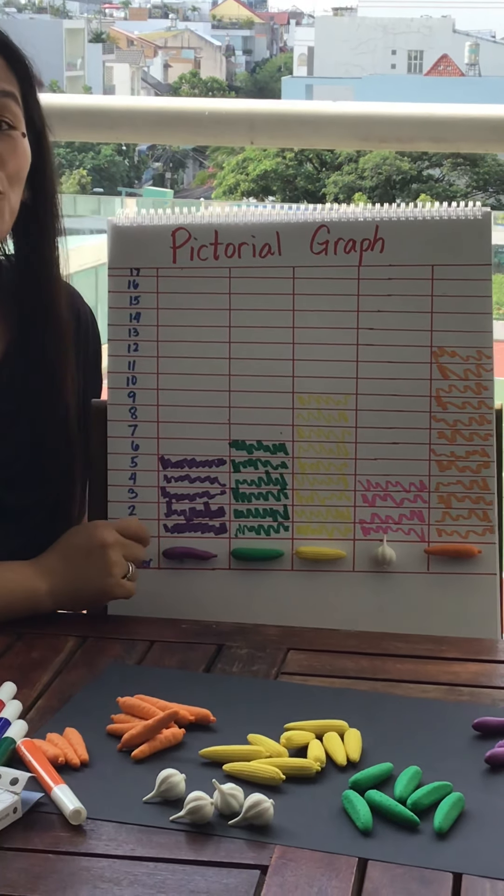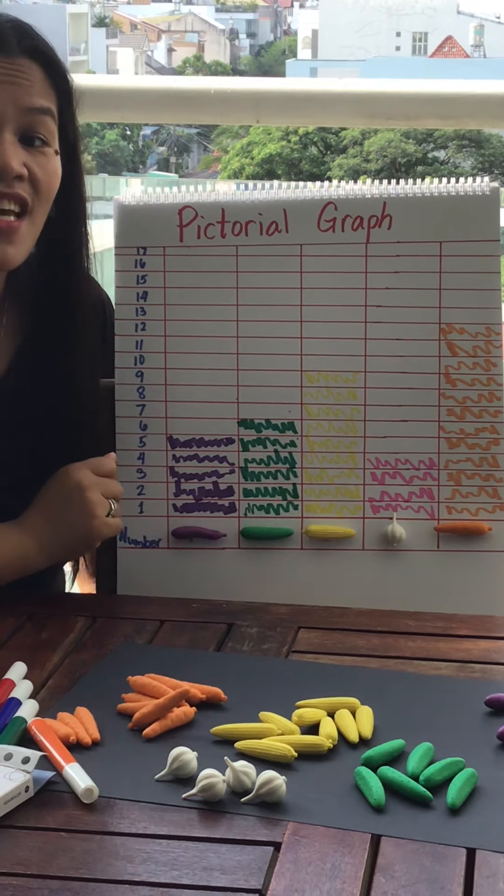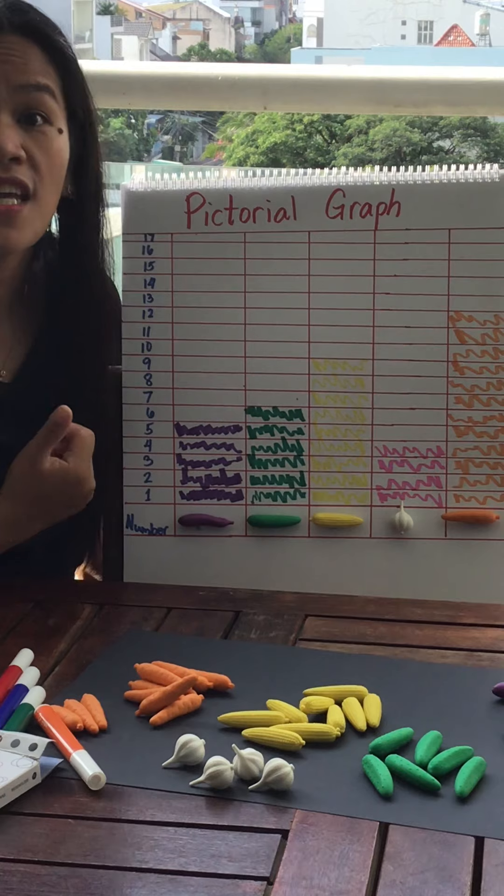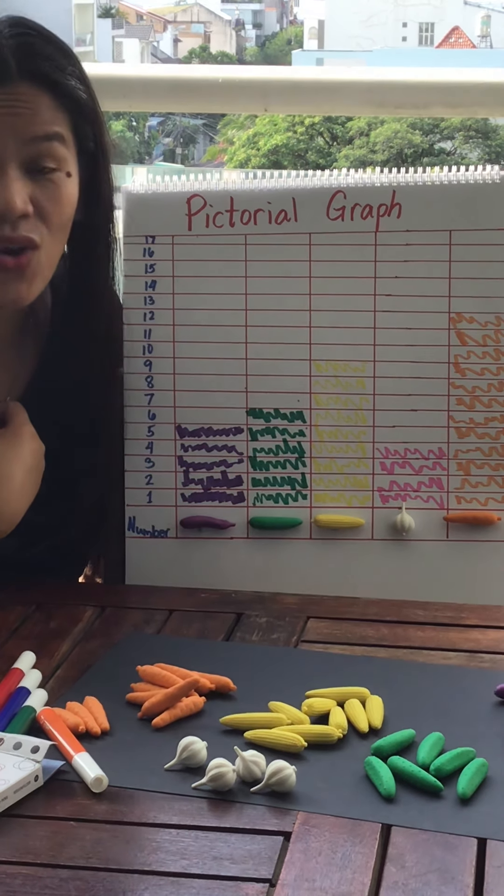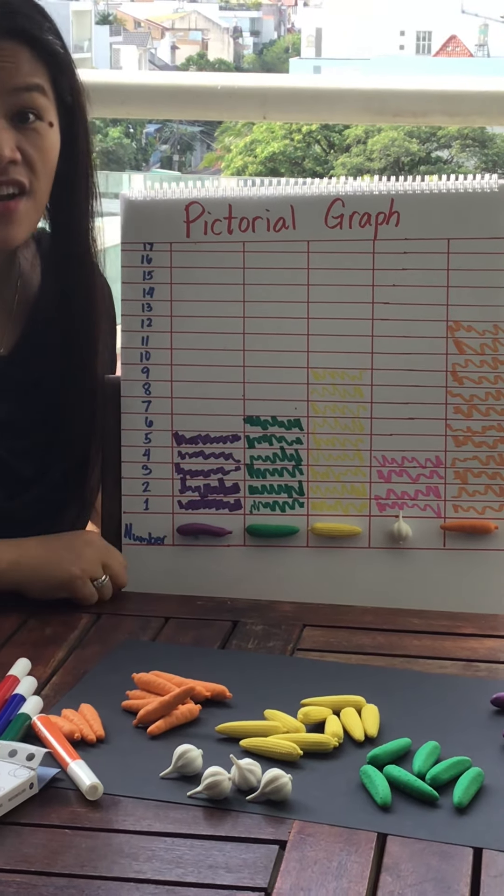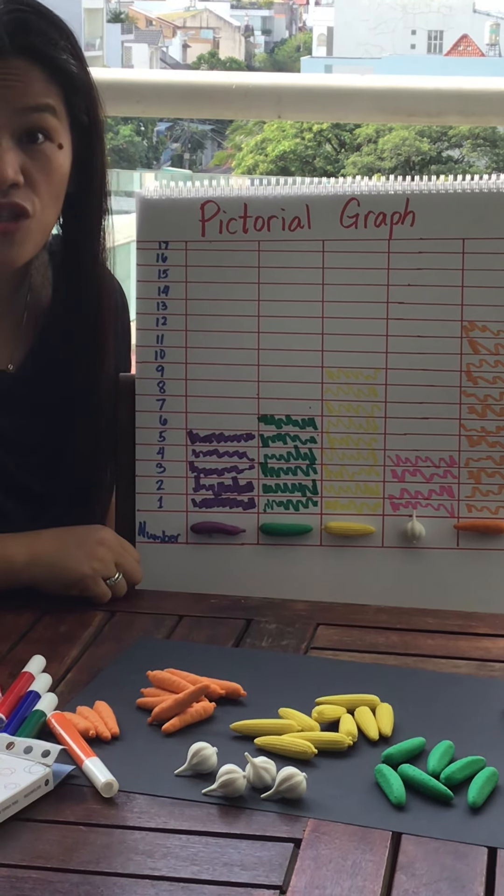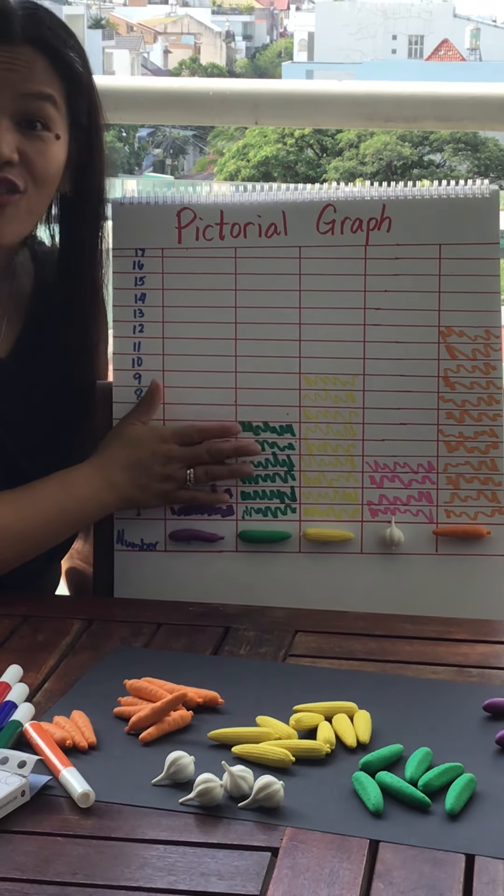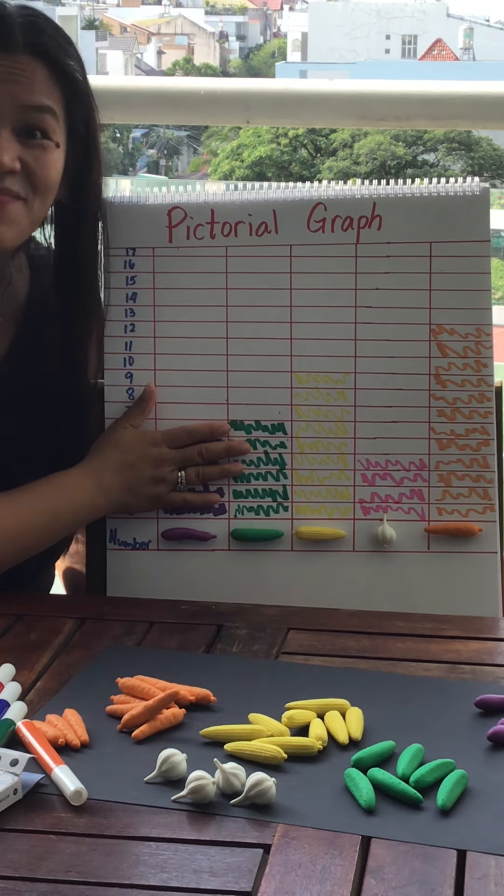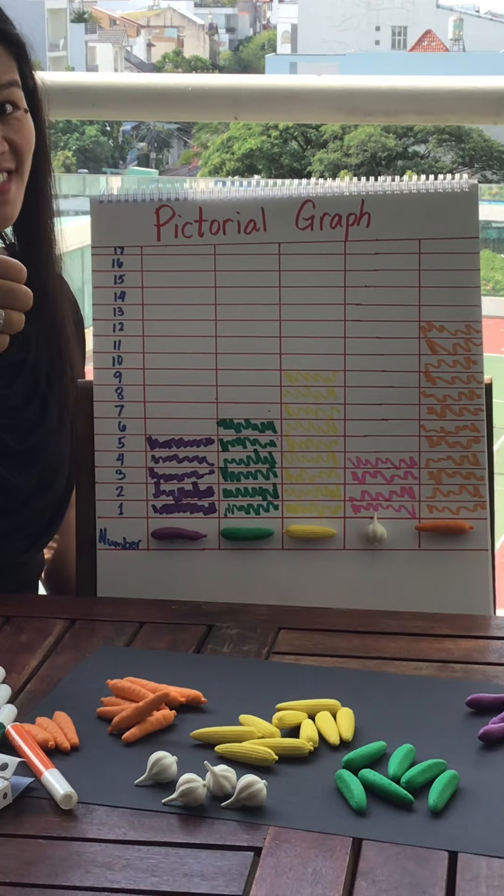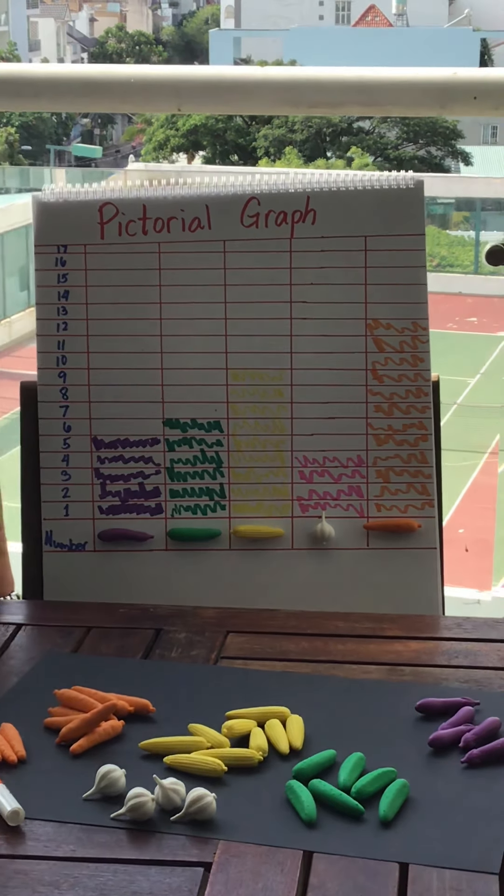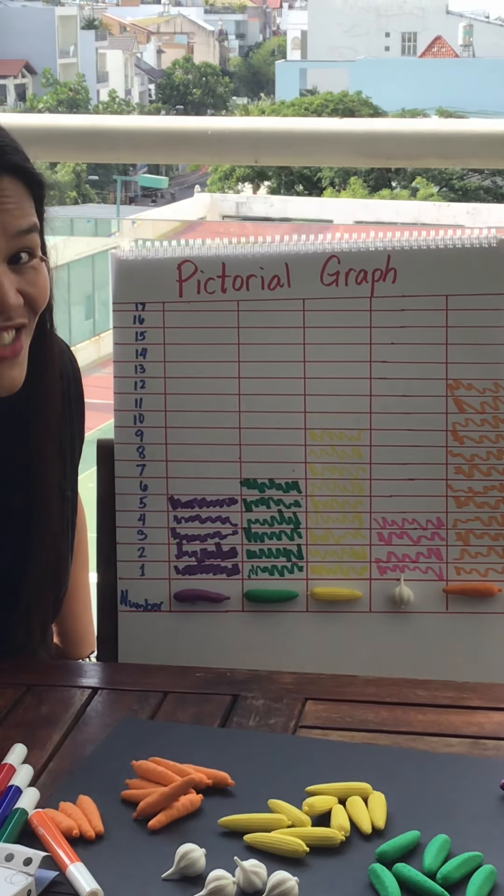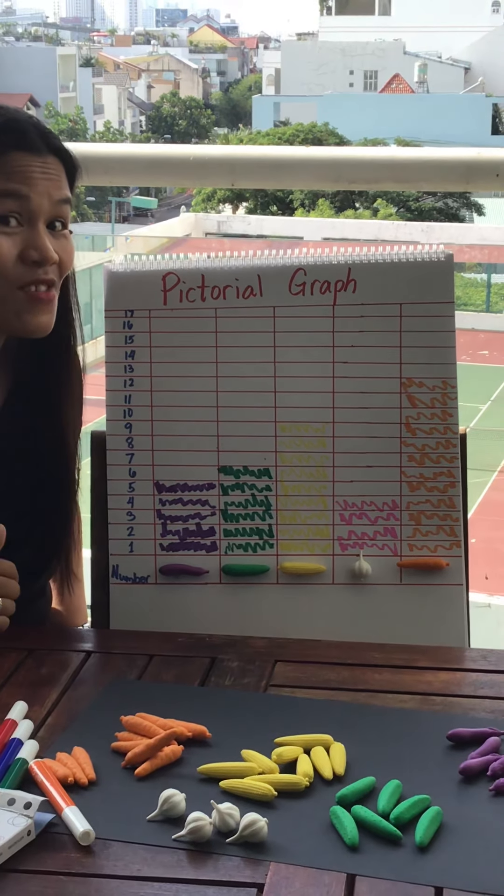Today for your activity, you have to color just like what Miss Julie did on your CISO activity. There's a picture there that you are going to look and count to show the pictorial graph. So have fun. See you later. I can't wait to see all the activities that you are going to do today. Send it to me.